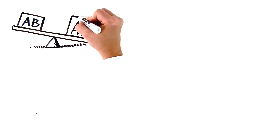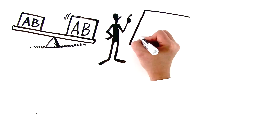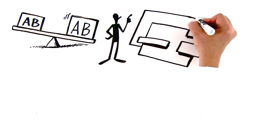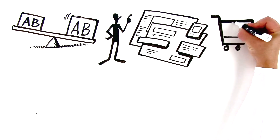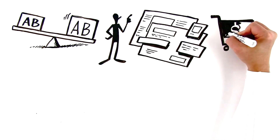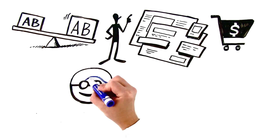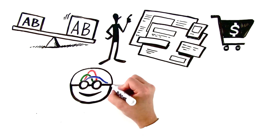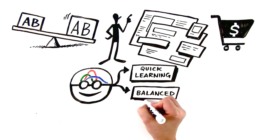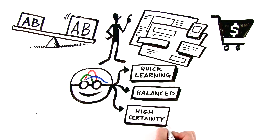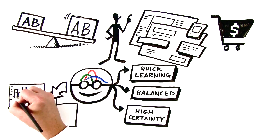Not all A/B tests are equal. Sometimes all you want to do is quickly test a few headlines, whilst other times you might want to test a change in your checkout cart, which might actually impact your revenue significantly. SmartStats gives you more control over your tests with three modes: choose either quick learnings, balanced, or high certainty to configure SmartStats to run different kinds of tests more efficiently.